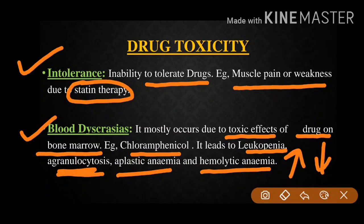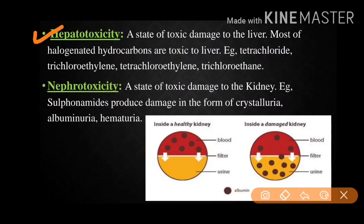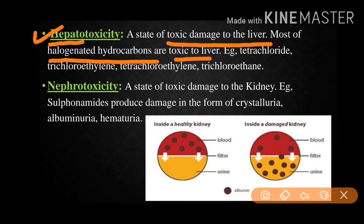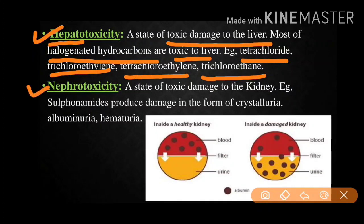Next is hepatotoxicity, which is a state of toxic damage to the liver. The word 'hepato' is related to the liver. Most halogenated hydrocarbons are toxic, and examples include carbon tetrachloride, trichloroethylene, tetrachloroethylene, and trichloroethane. All these halogenated hydrocarbons are harmful or toxic to the liver, hence hepatotoxicity.